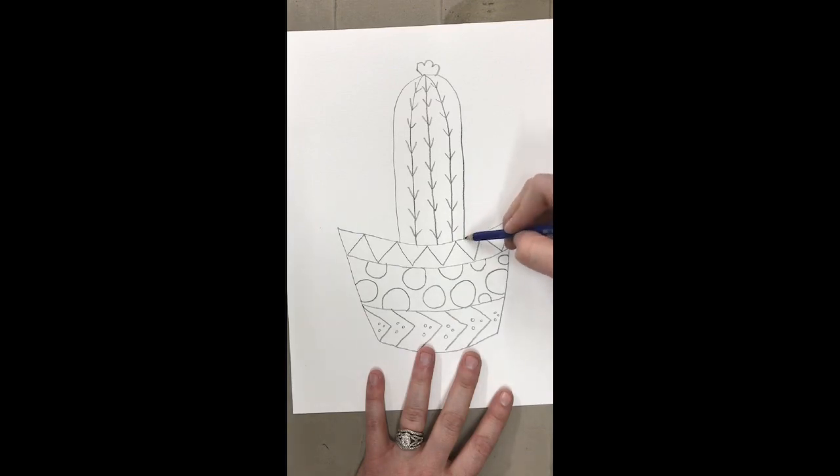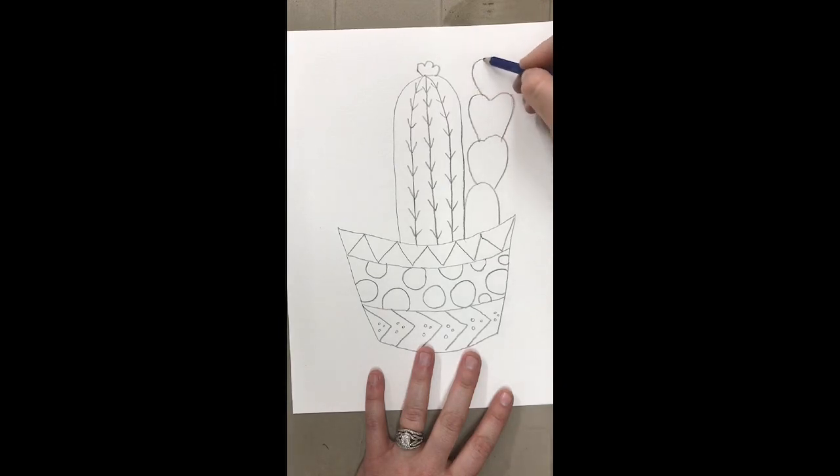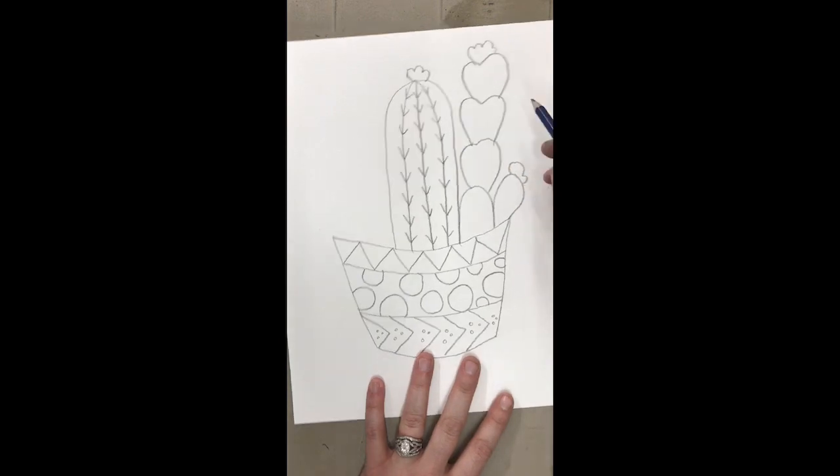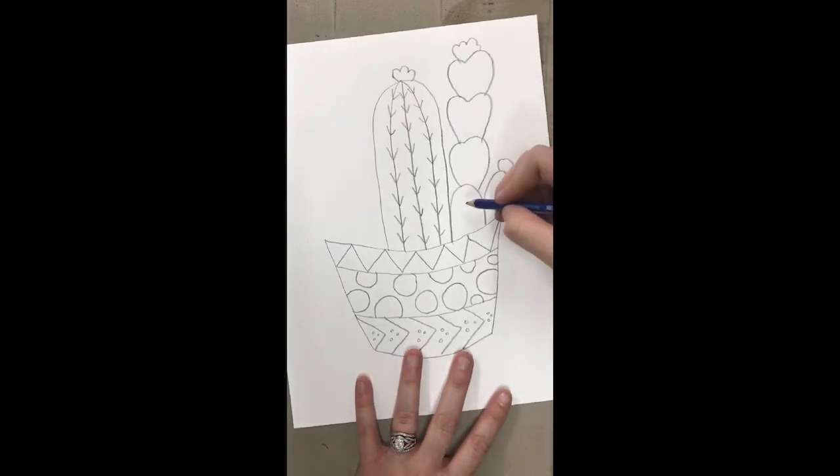I'm going to do a little Christmas cactus in the corner over here and they kind of have a little bit of a heart shape and then they bloom around Christmas time. That's why they're called a Christmas cactus. I have a Christmas cactus in my house but it hasn't bloomed for the last few years. And Christmas cactuses, they're not really pokey but they have little dots on them.